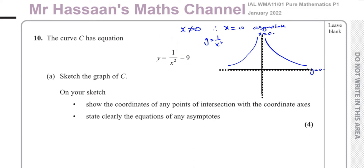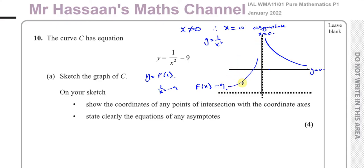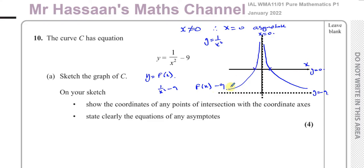What we actually have is 1 over x squared minus 9. If we consider y as f of x, then 1 over x squared minus 9 is f of x minus 9, which is a translation of 9 units vertically downward. So the horizontal asymptote at y equals 0 drops down to y equals negative 9, and the whole graph drops by 9 units. The graph crosses the x-axis at two points, which we'll calculate.